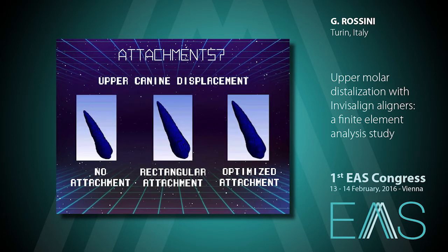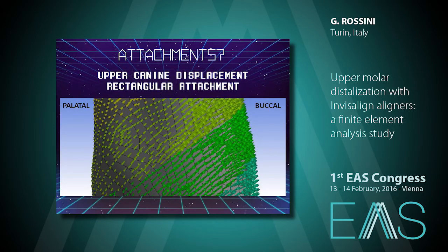We then repeated this experiment on the upper canine, because its natural inclination is different from the premolar. Without attachment, the uncontrolled tipping comes with much more intrusion. With a rectangular attachment, there is more control but still tipping. With the optimized attachment, the tooth experiences pure intrusion. Looking at the vector plot of upper canine displacement with rectangular attachment, we can see that the root of the canine experiences buccal tipping when distalized this way, which could be harmful for the periodontal health of the patient. You should be careful if you adopt this technique.